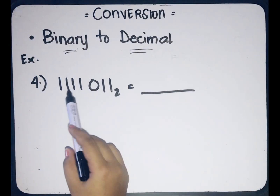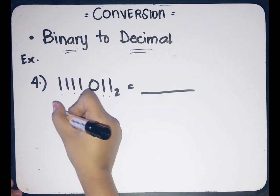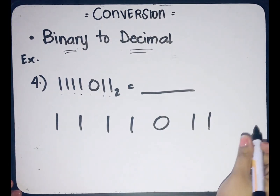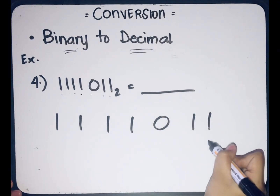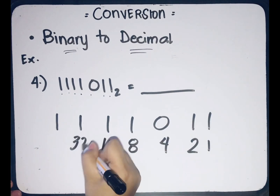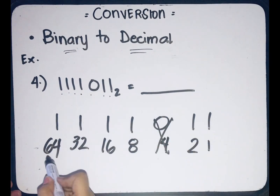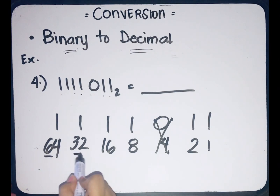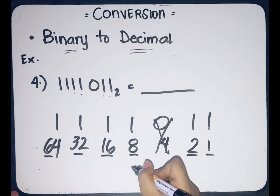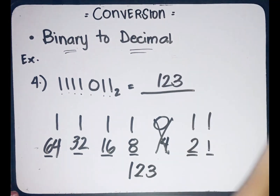Fourth example: we have binary 1111011. Let's rewrite it and identify the place values. We have 1, 2, 4, 8, 16, 32, and 64. Disregard the digit with a 0. Then add the remaining place values: 64 plus 32 plus 16 plus 8 plus 2 plus 1 equals 123. So 123 is the final answer.